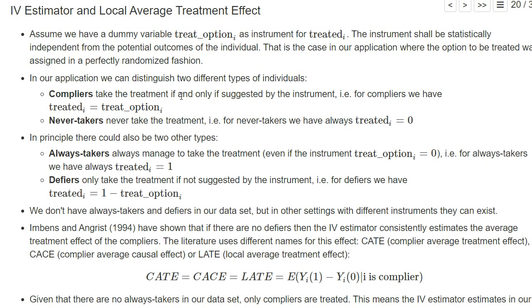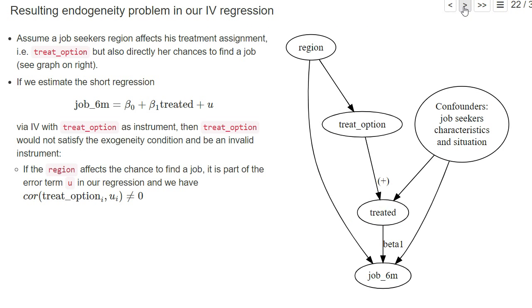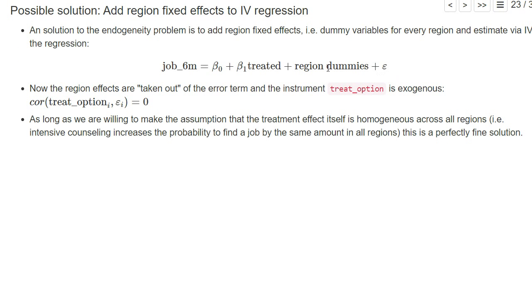The complier average treatment effect is the average effect of intensive job counseling on those people who are willing to accept the counseling. This would be fine if we have perfectly randomized experiments, but if the treatment assignment depends on the region, then just adding the region dummies does not necessarily make our instrumental variable estimator estimate this local average treatment effect. And why not? This is relatively complicated, or I just don't want to go into detail in this course.